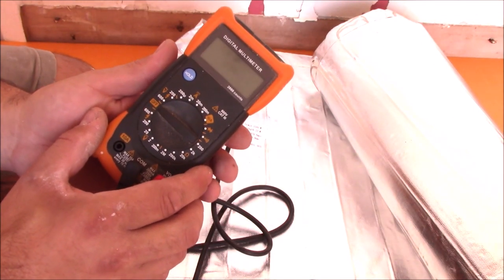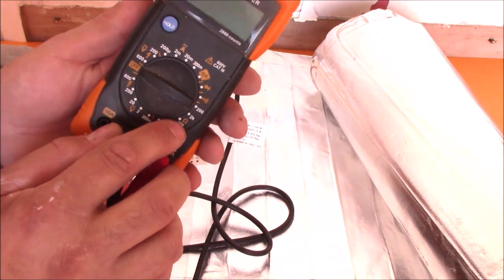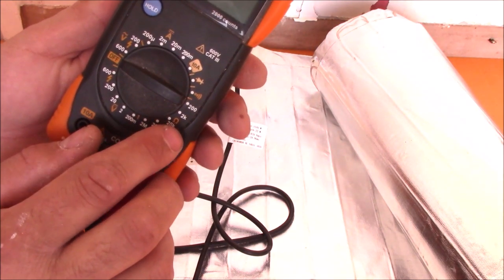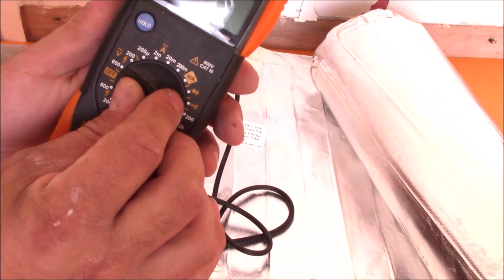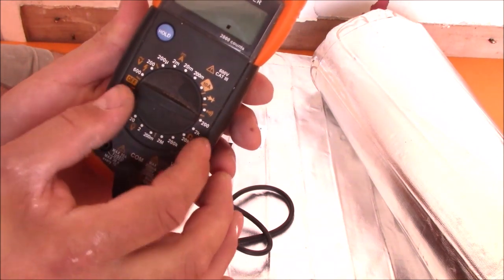To check it, we need to use a multimeter. You see this sign, that's the resistance, so you need to put it onto 200.